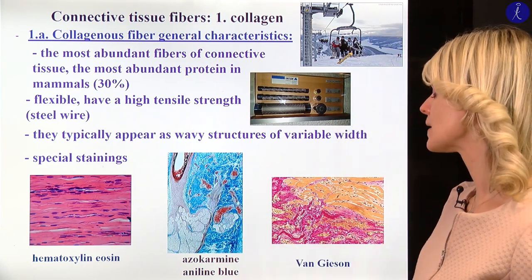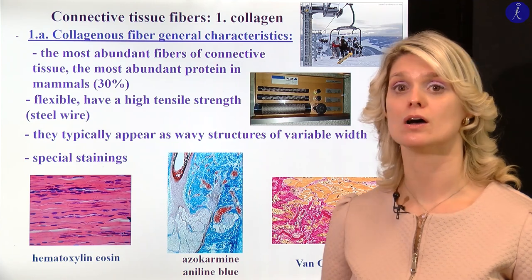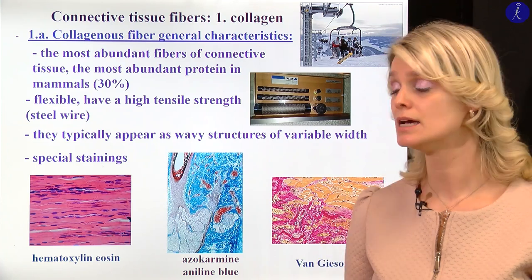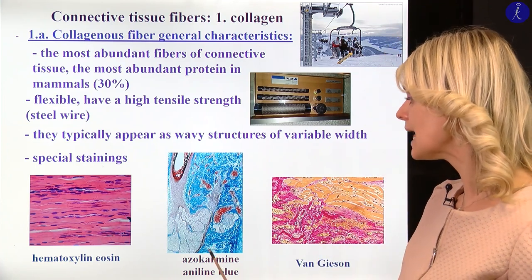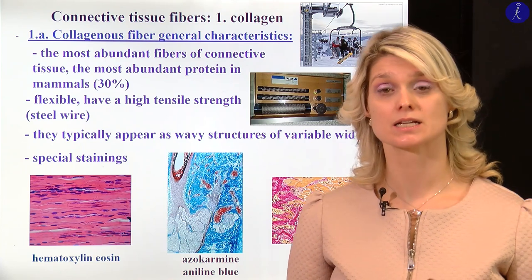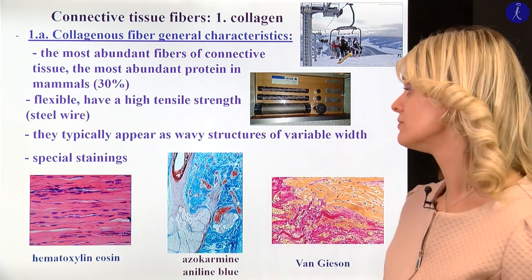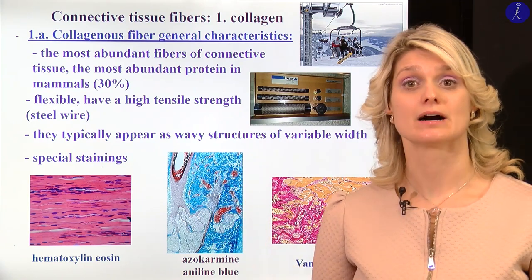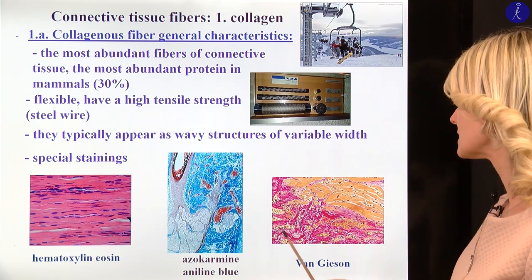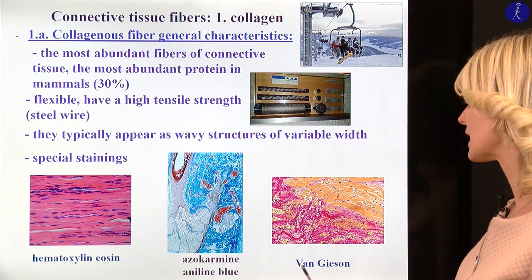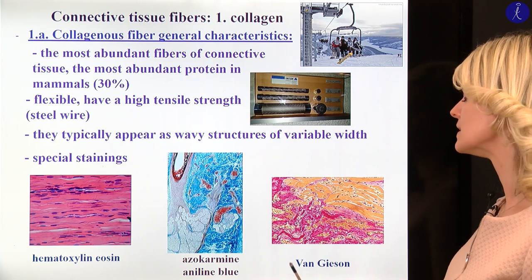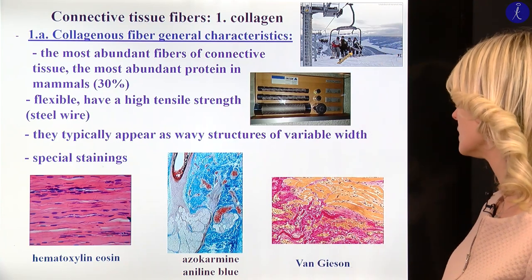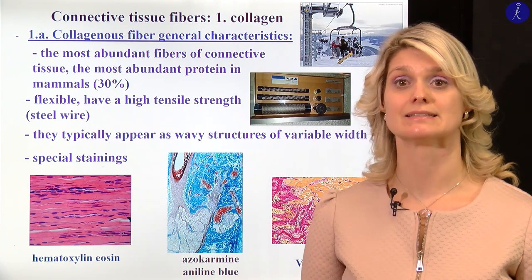Here you can see another special staining of the fibers — the azocarmine and aniline blue, the azon staining. With azon staining, the aniline blue stains the connective tissue fibers blue, and the cytoplasm of the cells is red. Here you can also see a special staining of the collagen fibers called the van Gieson staining, where you see the fibers with a very, very intensive color.